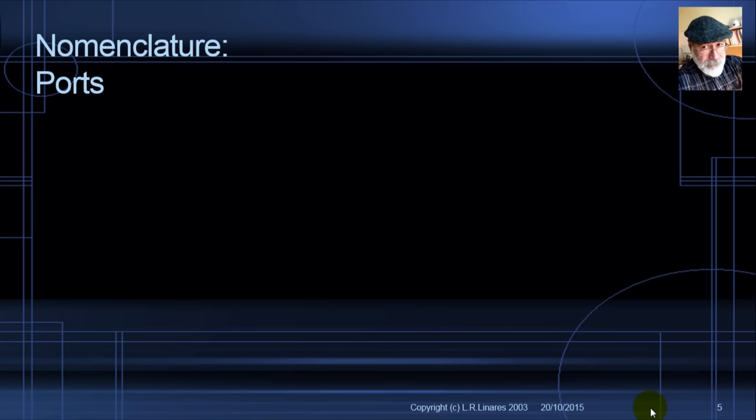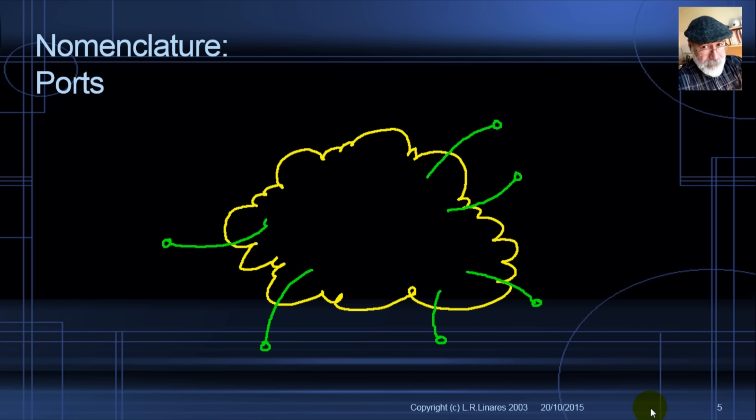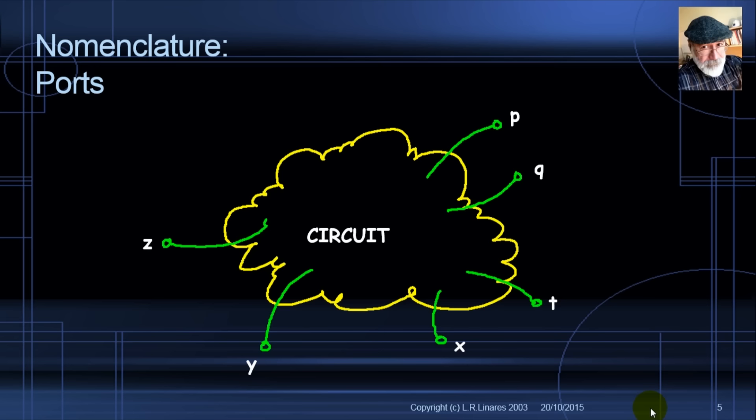Before we begin, let's have a little bit of nomenclature. What is a port? If we have a circuit, to connect anything to that circuit we need at least two nodes of connection. That pair of nodes is what we define as a port, and the new network is docked into that port. We extrude wires out of given nodes and connect an external circuit to that port.